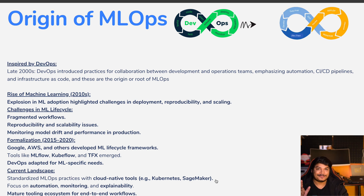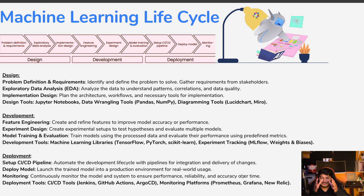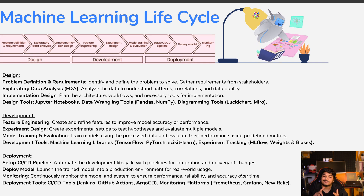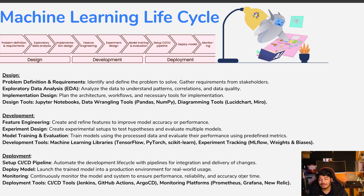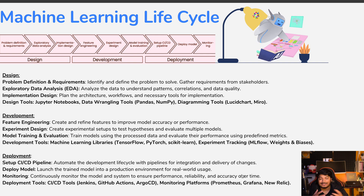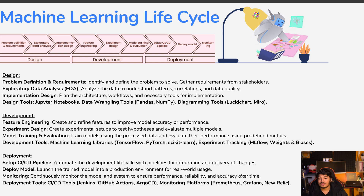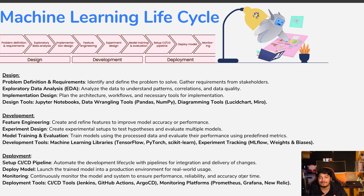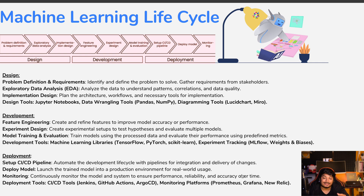Now we'll learn about the machine learning lifecycle. We divide it into three parts: Design, Development, and Deployment. In the design phase, we do problem definition, gather requirements, perform exploratory data analysis (EDA), and do implementation design. Tools used include Jupyter Notebook, data wrangling tools like Pandas and NumPy, and diagramming tools like Lucidchart or Miro.